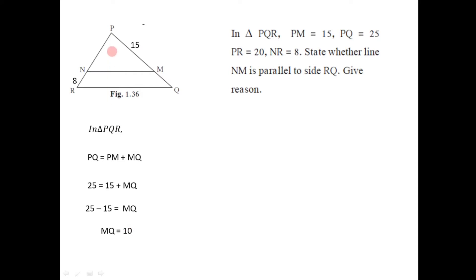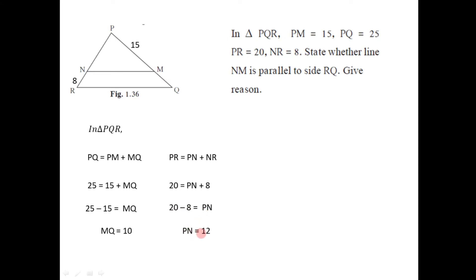In the same way, for the other side PR, we have PR equals PN plus NR, since these three points are collinear. The length of PR is given as 20 and NR is 8, so 20 minus 8 equals PN. Therefore PN equals 12. Now we should find two ratios.